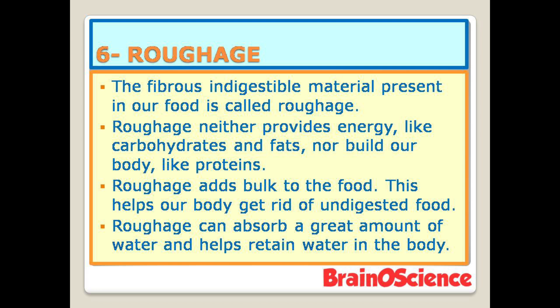Roughage, also called dietary fiber, is the fibrous indigestible material present in our food. Roughage neither provides energy like carbohydrates and fats, nor builds the body like protein. Roughage adds bulk to the food, which helps our body get rid of undigested food. Roughage can also absorb a great amount of water and helps retain water in the body. The main sources of roughage are salad, vegetables, fruits, corn, unpeeled apple, and daliya.